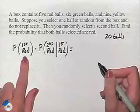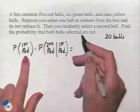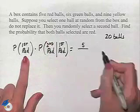The probability of the first one being red would be the number of red balls in the box. That's five divided by 20.